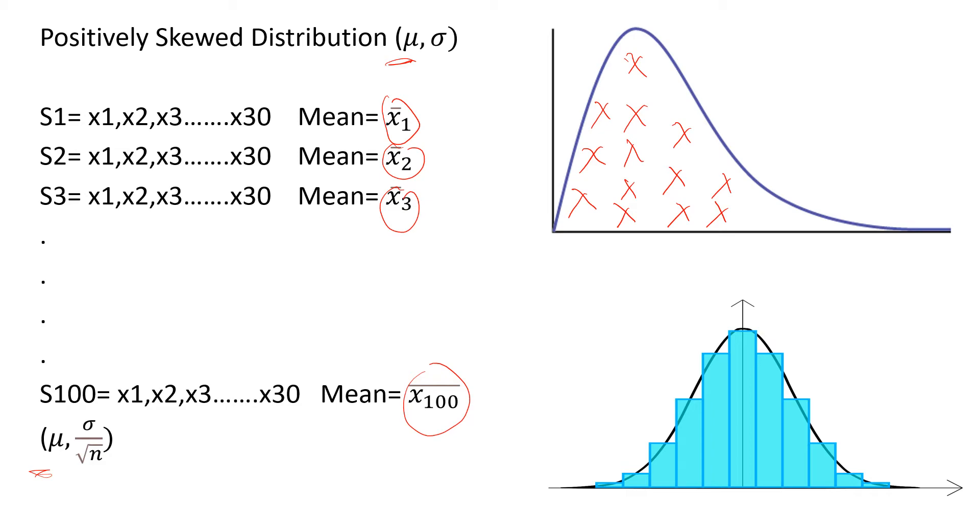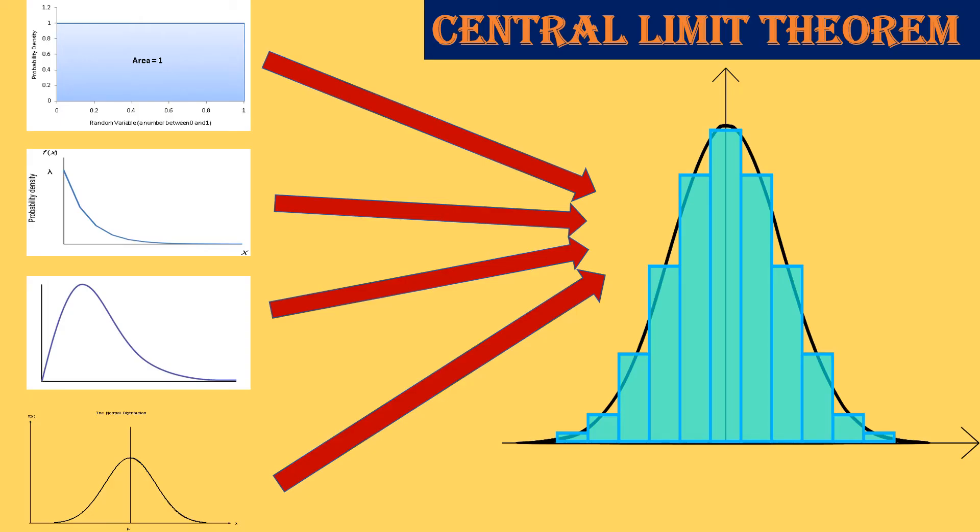Now Central Limit Theorem says this is true in case of any population distribution. So as n increases, sample size increases, sample means of all these distributions—whether it is uniform distribution, exponential distribution, Q distribution, normal distribution, or even bimodal distribution—the sample mean distribution tends to be normally distributed as sample size increases.